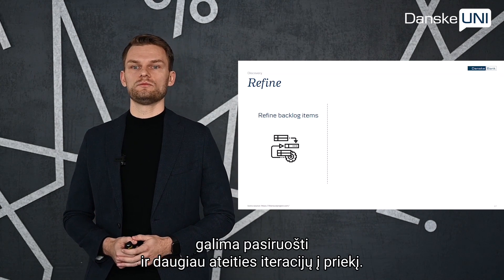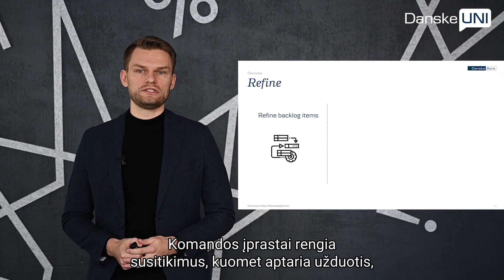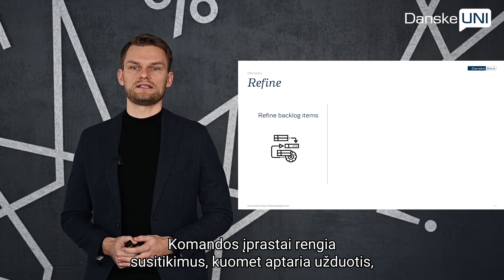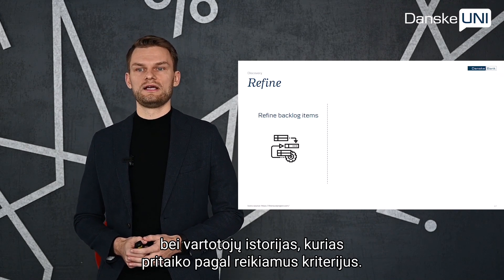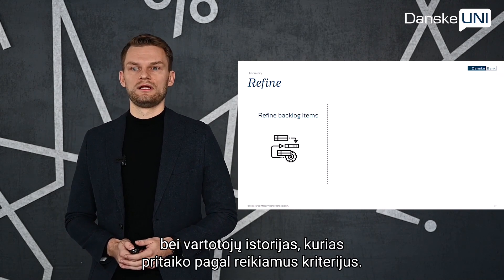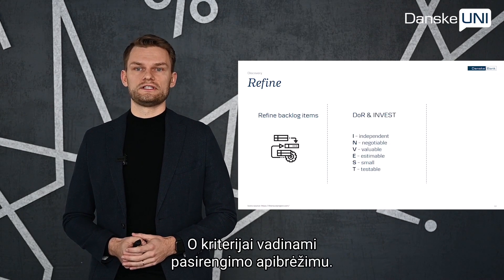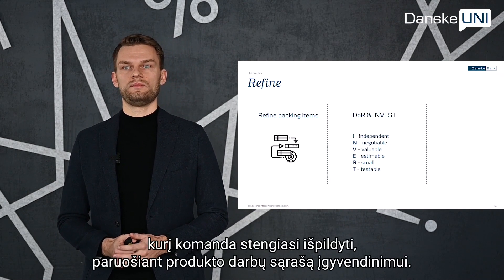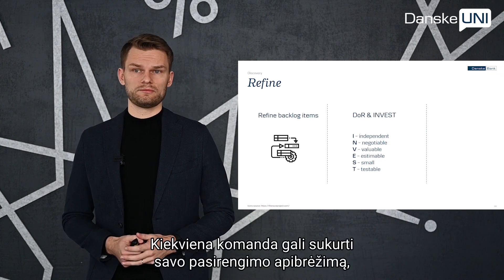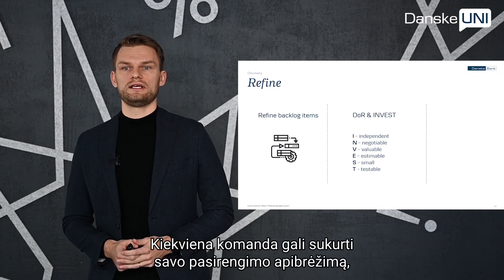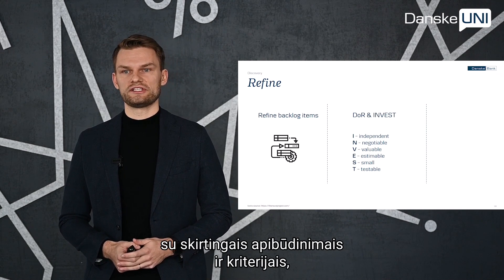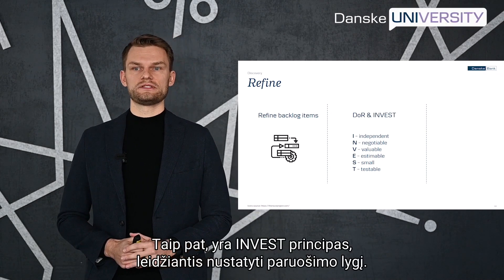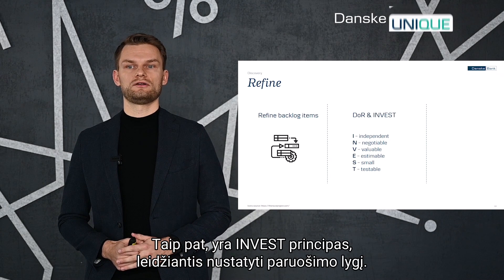If we have a compliance, regulatory, or any other initiative where everything is more or less clear, we can prepare backlog items for even more iterations in advance. Usually teams have a backlog refinement meeting during which team members discuss tasks and user stories and refine them so that they meet a set of criteria needed for implementation. This criteria is called definition of ready — basically a checklist of agreed points the team aims to fulfill in order to have backlog items ready for development. Each team can come up with its own definition of ready that can include different descriptions, acceptance criteria, and other agreed points. Additionally, there is the INVEST principle, which helps to align understanding of when backlog items are well prepared.